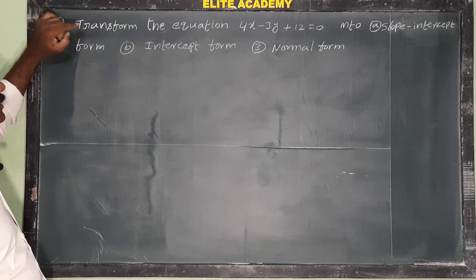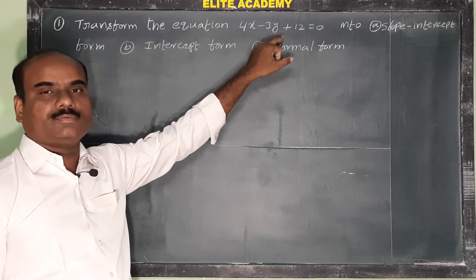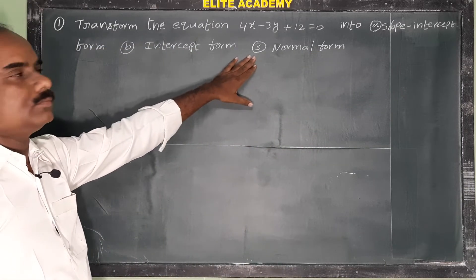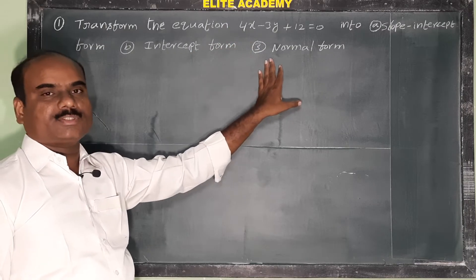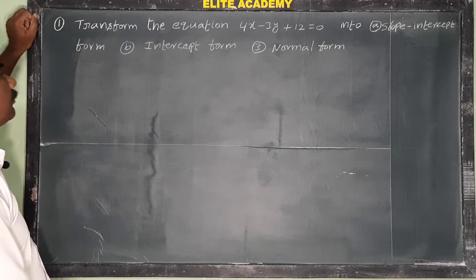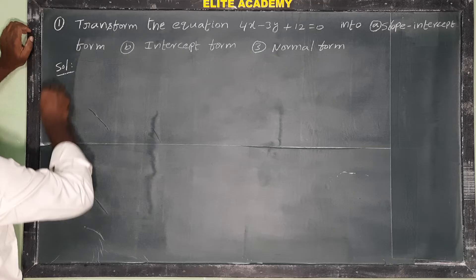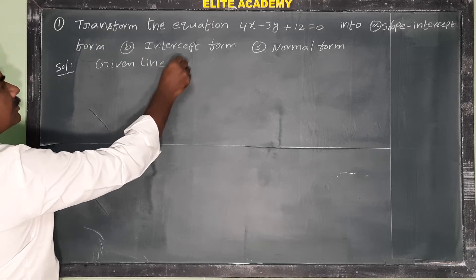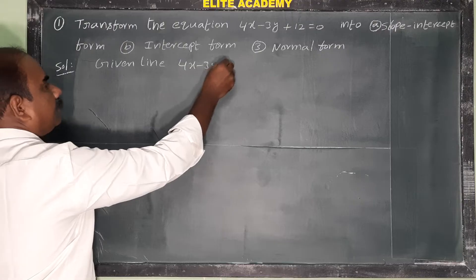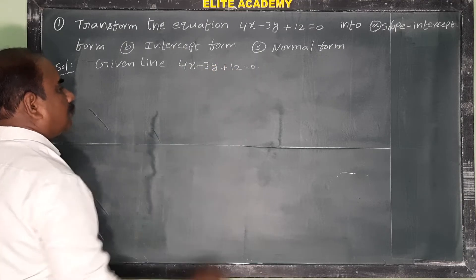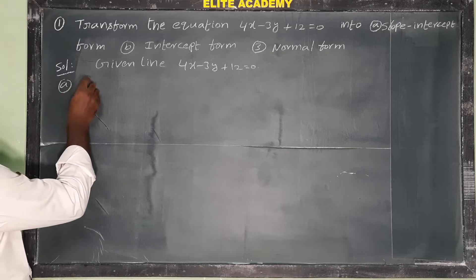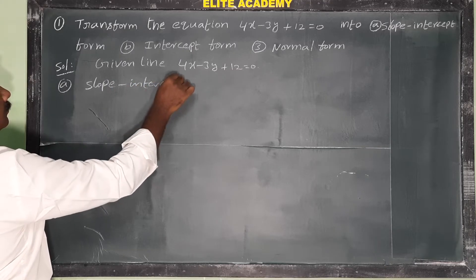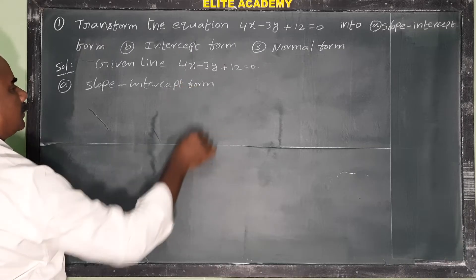Okay, straight lines — four marks question. Transform the equation 4x minus 3y plus 12 is equal to 0 into slope-intercept form, intercept form, and normal form. There are three forms we need to find for this straight line.